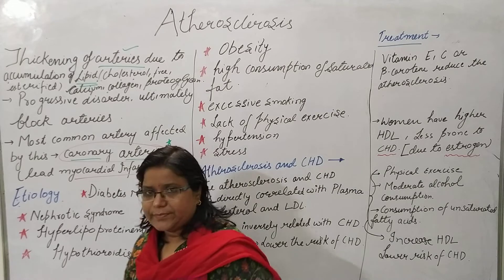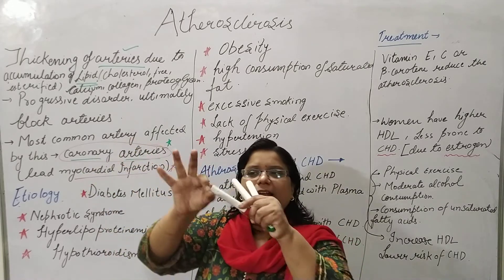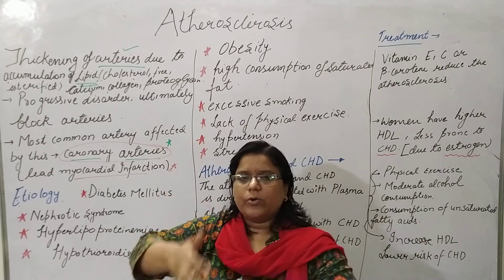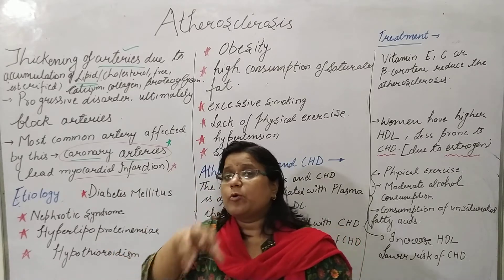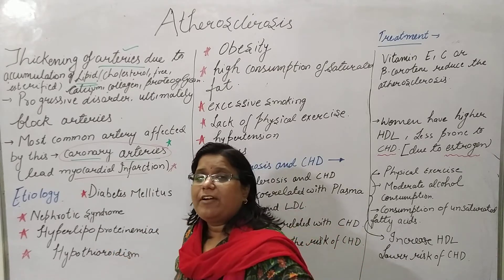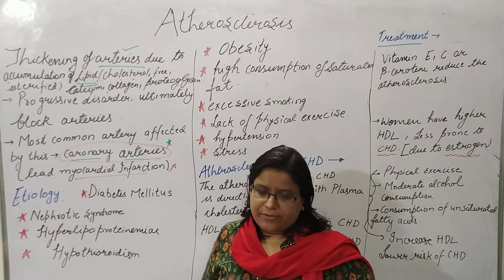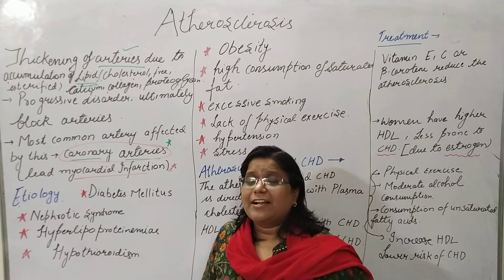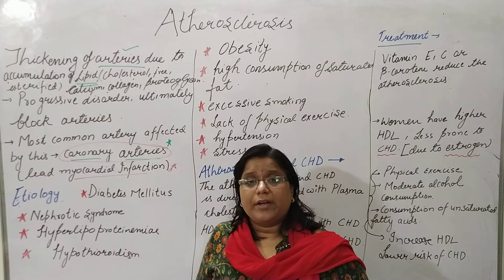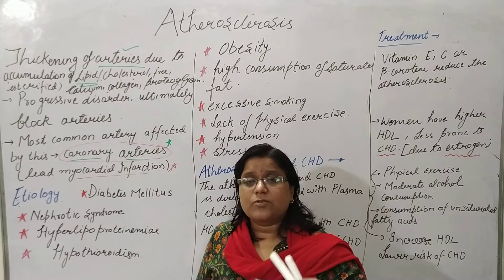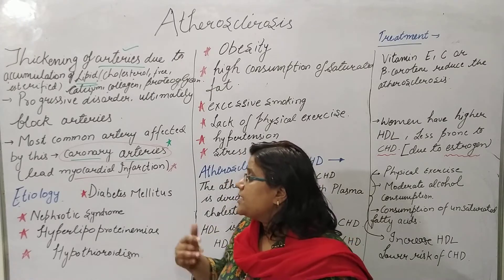In atherosclerosis, the diameter of the coronary artery gets constricted. Other arteries and vessels are also affected, but the most prominently affected blood vessel is the coronary artery, because it directly affects the heart and generates a heart attack, making it the most important site for development of atherosclerosis.